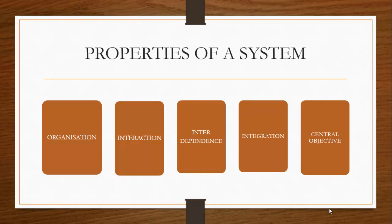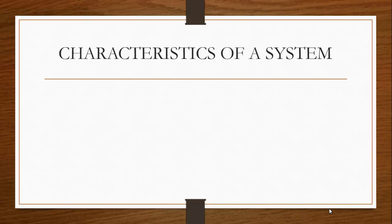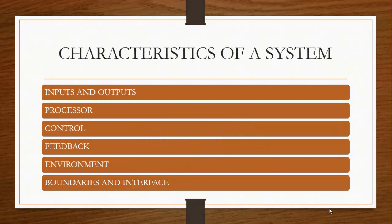Having covered the properties, we move to the characteristics of a system. Some authors also regard these as components that make up the system. The first characteristic is inputs and outputs. Every system must receive input and produce output. Input simply means information that enters into the system for processing. Output is the outcome of the processing, and the main aim of every system is to produce an output that is desirable or useful for the user.